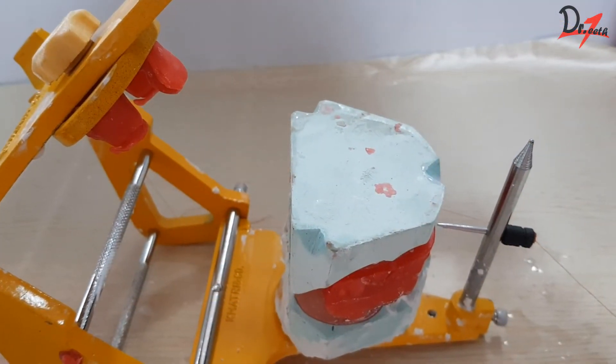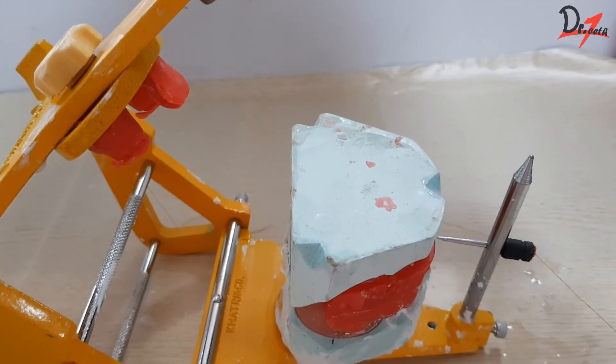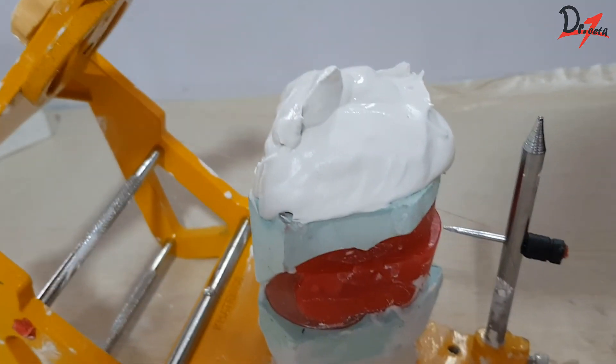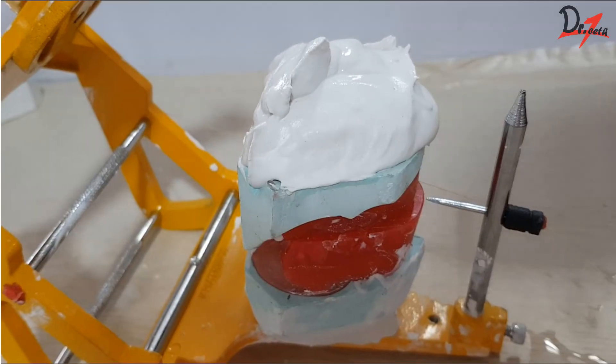Then, keep the articulator upside down, remove the modeling clay and repeat the process. Make sure you apply Vaseline to the notches of the cast for easy separation during processing.